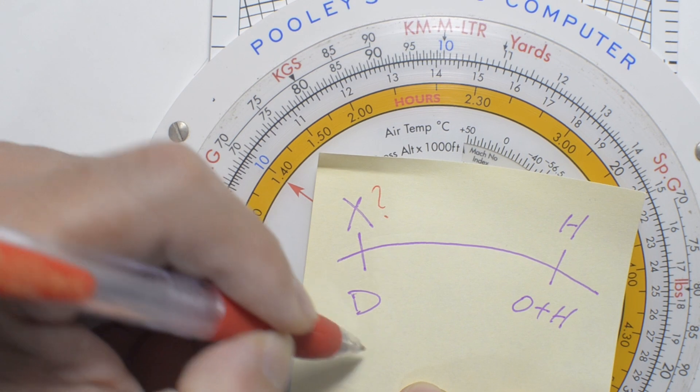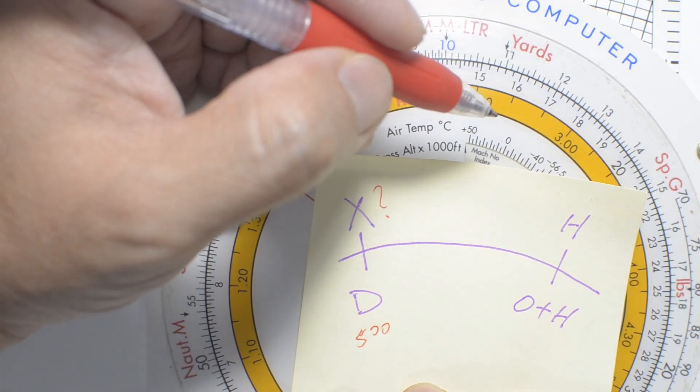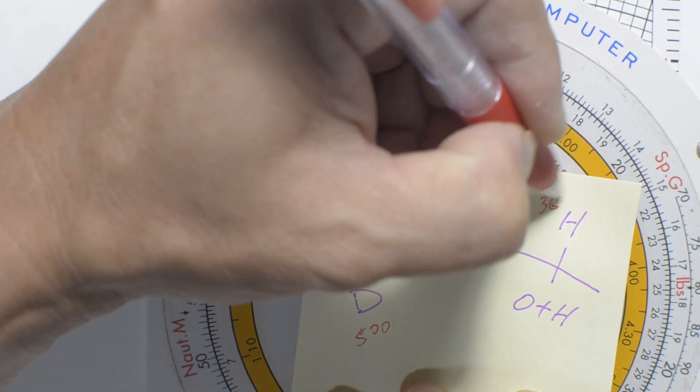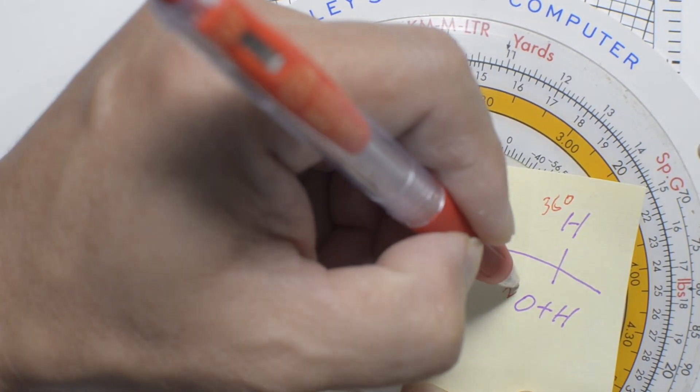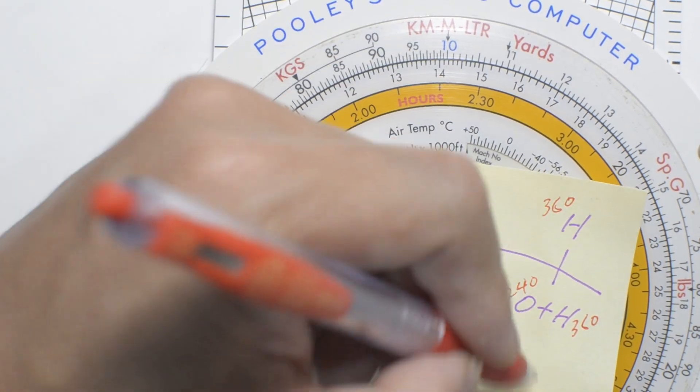X is unknown, D is 500. Ground speed home is 360 knots. Ground speed out is 240. And we're going to add that to 360. So this in total will give me 600.